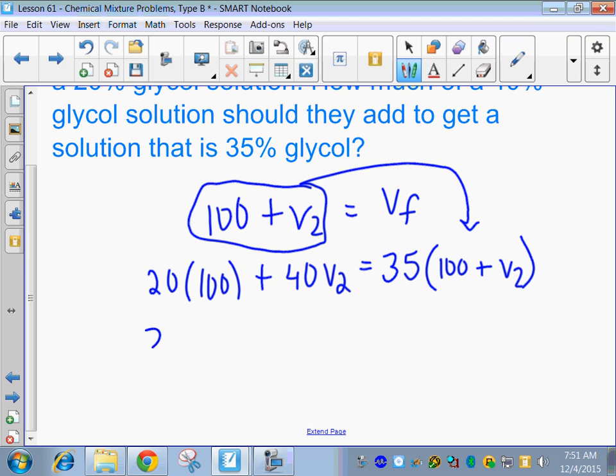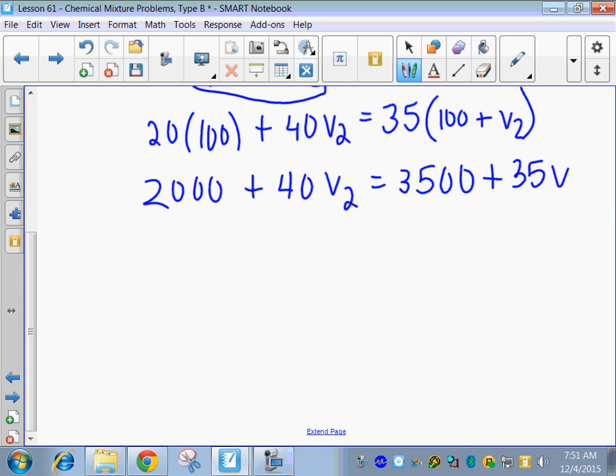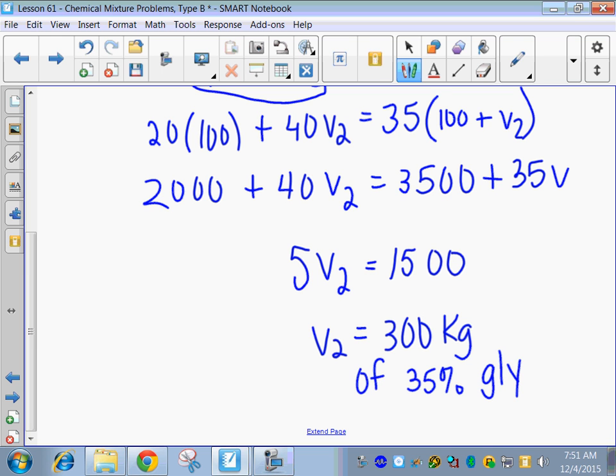So 20 times 100 gives me 2,000. 35 times 100, 3,500. And 35 times V2. I'm going to subtract the 35 over here. So I get 5 V2. And I'm going to subtract the 2,000 over here. That gives me 1,500. And divide by 5. So we get 300. And what were we talking about here? Kilograms of 35%. All right, you guys try this one.